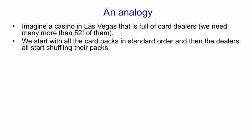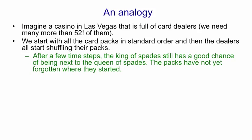Let's suppose that has the ace of spades and the king of spades and the queen of spades. Then the dealers all start shuffling, and they do random shuffles. After a few shuffles there's still a good chance that the king of spades will be next to the queen of spades in any given pack, so the packs have not yet forgotten where they started. Their initial order is still influencing their current order.